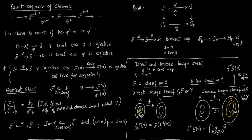So basically we are taking the direct limit of all the sets V which contain f(U). This could be a presheaf, and therefore you sheafify it to obtain the inverse image sheaf f⁻¹G.